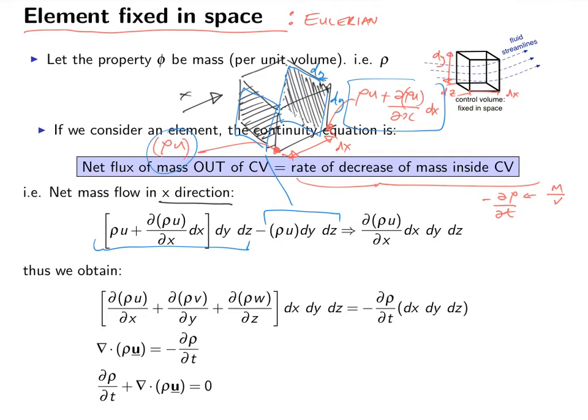So one minus the other gives us the net flux of mass in the x direction. And this, if you look at it, this term and this term cancel out. So all you're left with is this term, dx. So d rho u dx times the three incremental distances, which is this here.